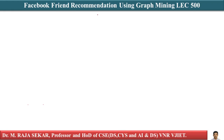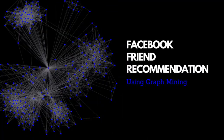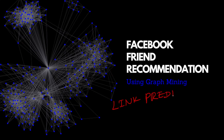Welcome to Rajashekar Classes on Applied Data Science with Python. This is lecture number 500. In this lecture, we will try to understand Facebook recommendations using graph mining. This is a very interesting case study about social networks. The problem is called the link prediction problem.